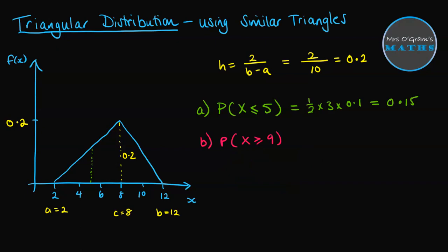Let's take a look at another one. What about if x was greater than or equal to 9? So I'm just going to mark on the 9, and we've got similar triangles from this big one on the right side to the smaller one on the right side. So we start off with the big one being 0.2, and the base across here is 4. That becomes a smaller triangle, where the base is from 9 to 12, so that is 3.